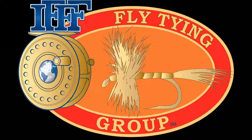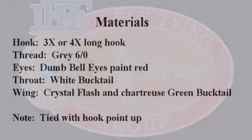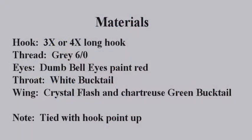Materials needed for this fly: a 3X or 4X long hook, gray 6-0 thread, dumbbell eyes painted red, throat white bucktail, wing crystal flash and chartreuse green bucktail. Note, tied with hook point up.